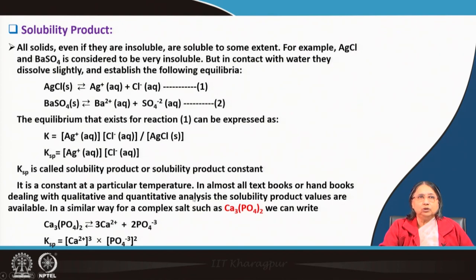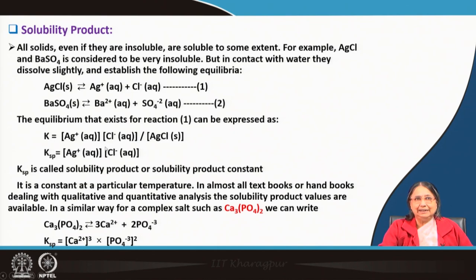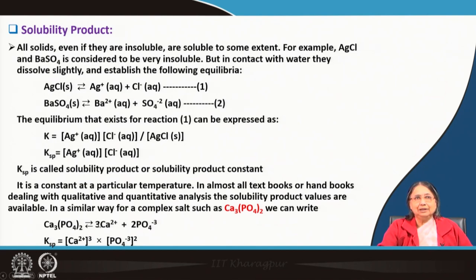In almost all textbooks and handbooks dealing with qualitative and quantitative analysis, solubility product values are listed at 25°C. For a complex salt like Ca₃(PO₄)₂, developing the equilibrium expression is more involved: 1 mole produces 3 moles of Ca²⁺ and 2 moles of PO₄³⁻, so Ksp = [Ca²⁺]³[PO₄³⁻]², where stoichiometry determines the exponents.